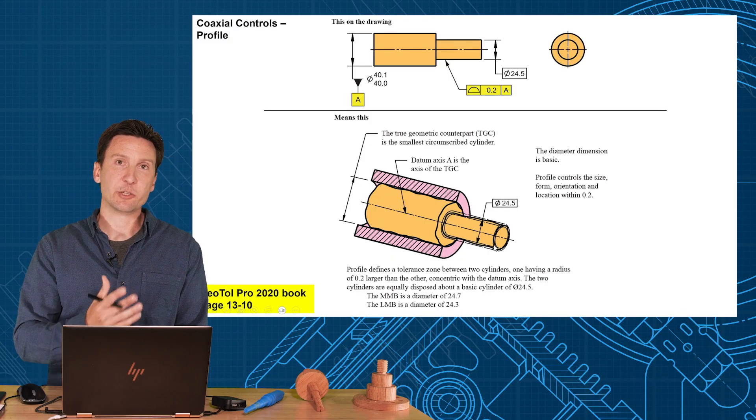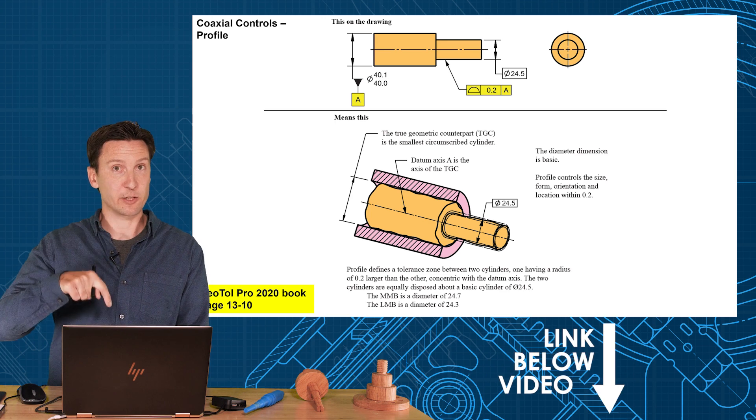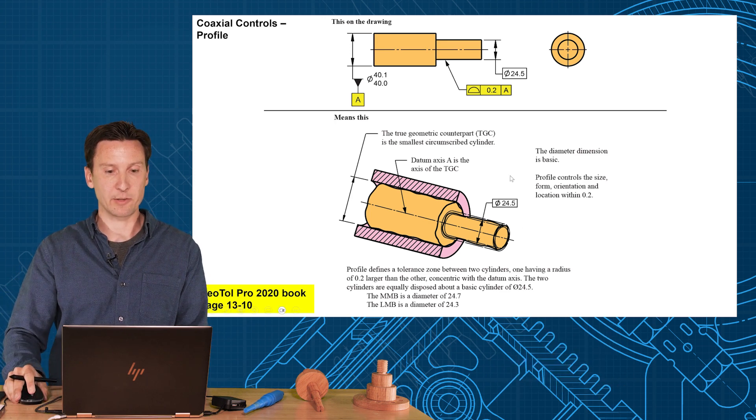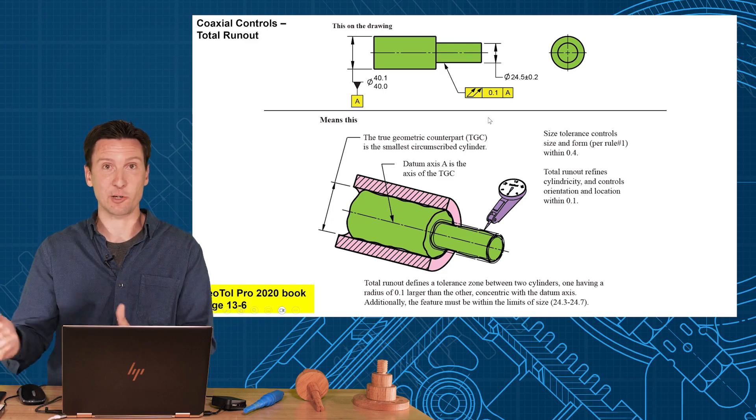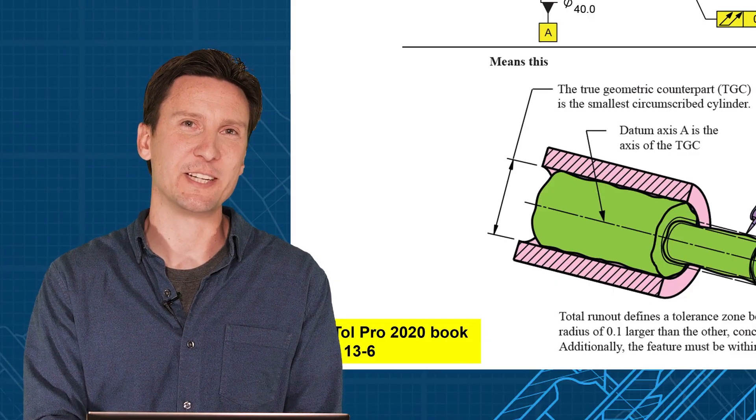I have examples of these in my GD&T Pro book, which I've linked in the description below if you'd like to read more about this. I have both the profile tolerance and the runout, and circular runout and position all at once, and those are shown in Unit 13 of that book.